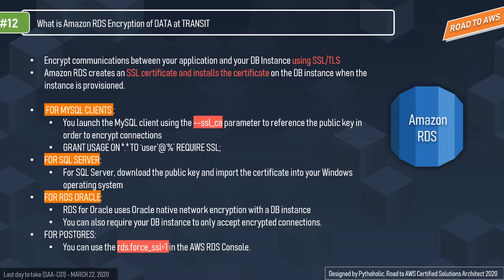For SQL Server, you can download the public key and import the certificate into your Windows operating system to encrypt data in transit. Oracle uses Oracle Native Network Encryption with a DB instance by default. For PostgreSQL, you set the parameter 'rds.force_ssl=1' in the RDS console to ensure that data is encrypted during transit.